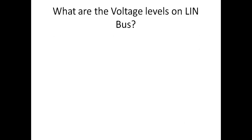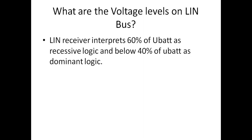What are the voltage levels on LIN bus? The voltage levels on LIN bus are quite different from CAN. The LIN receiver interprets logic as recessive if the voltage on the bus is above 60% of U-BAT, the battery voltage which is roughly about 14 volts. If it falls below 40% of U-BAT, the receiver interprets it as dominant logic. Dominant means 0, recessive means 1.